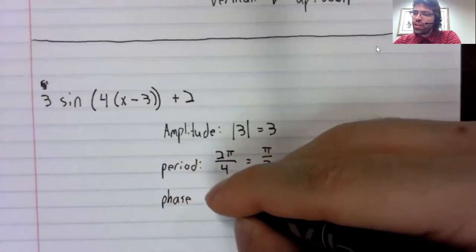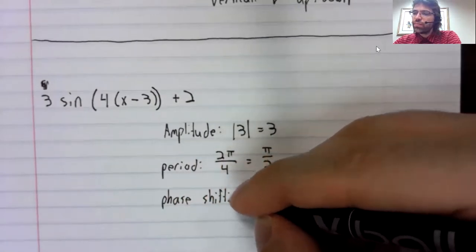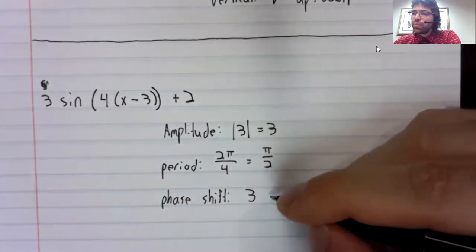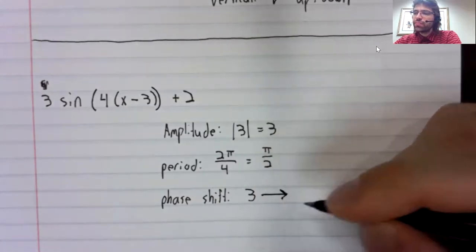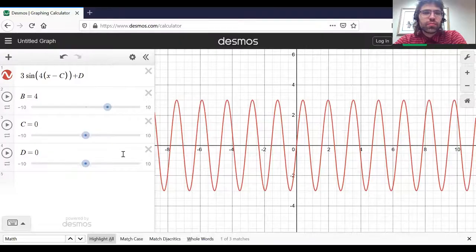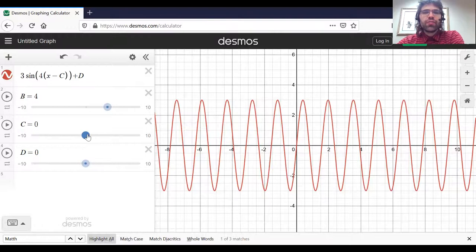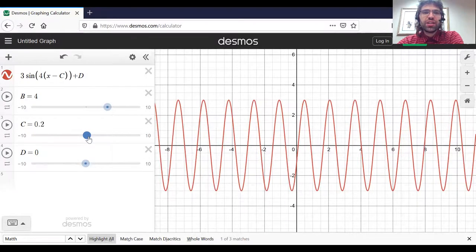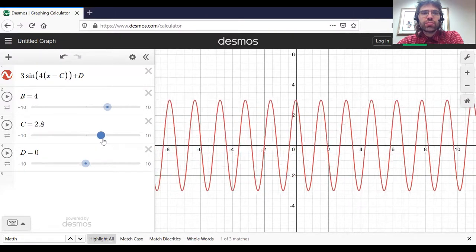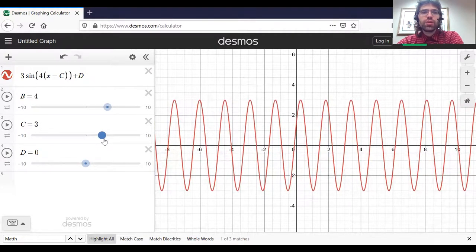The phase shift is given by this three. And because we are subtracting, it's going to be three units to the right. So at the moment, we don't have any phase shift, but we'll start increasing C. And as C increases, we go to the right, and we keep going until we're three units to the right.